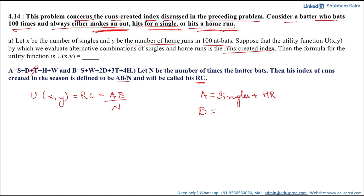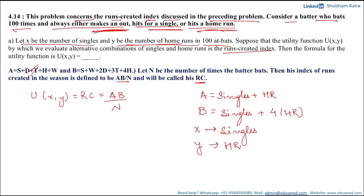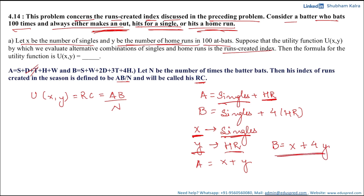Similarly, B equals singles plus 4 times home runs. We are given that x represents the number of singles and y represents the number of home runs. Making these substitutions, A becomes x plus y, and B becomes x plus 4y.